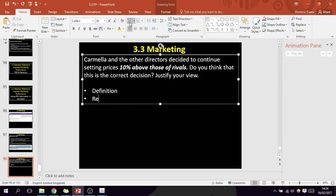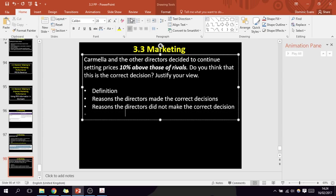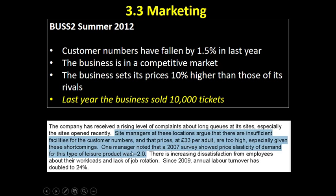The structure is: reasons the directors made the correct decision, reasons the directors did not make the correct decision in terms of their pricing, and a conclusion. Now, as soon as you see the price elasticity of demand figure, you should immediately recognise that minus 2.0 means this is an elastic product — in other words, consumers are highly responsive to changes in price.